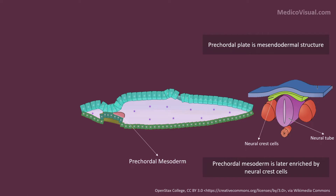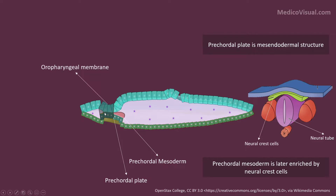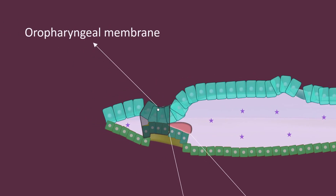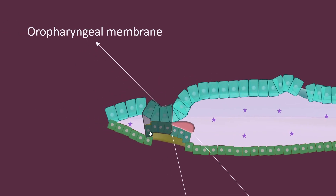The precordial mesoderm will contribute to the formation of mesodermal derivatives of the head of the baby. As the caudal end of the prospective oropharyngeal membrane became trilaminar, the actual oropharyngeal membrane is now restricted to the cranial bilaminar end only. Previously the whole structure was the oropharyngeal membrane, but as the caudal end became trilaminar, the oropharyngeal membrane is restricted to the cranial part — because by definition the oropharyngeal membrane is a bilaminar structure. Later you will learn that this oropharyngeal membrane will rupture to form the mouth opening.